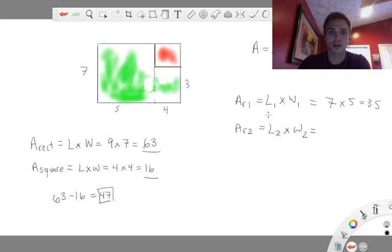And then length 2 is 4, and width 2 is 3. So 4 times 3 equals 12.